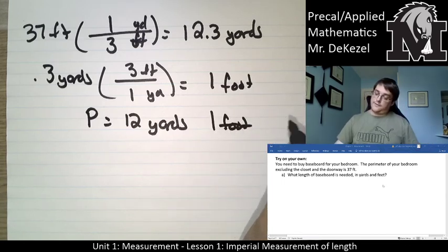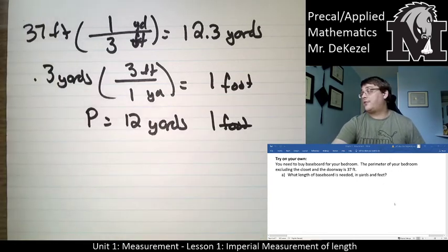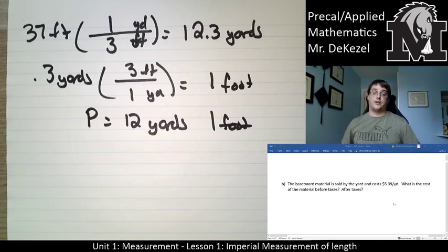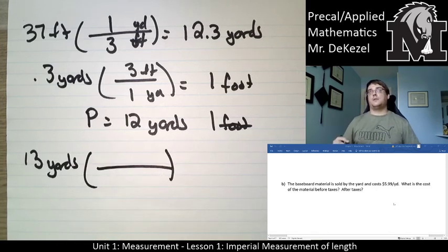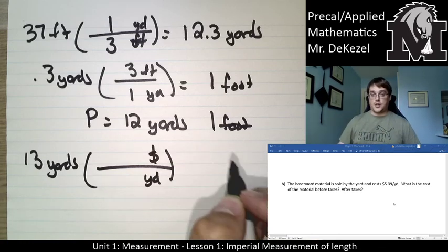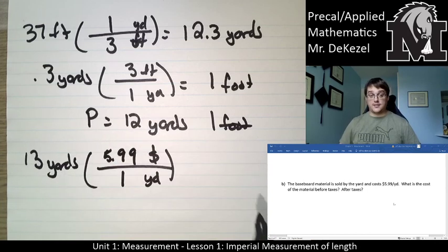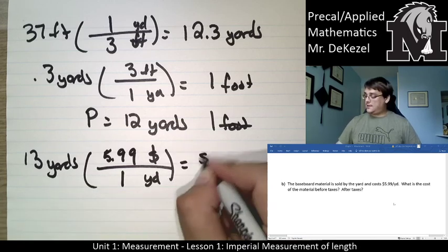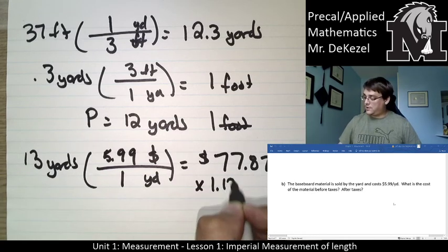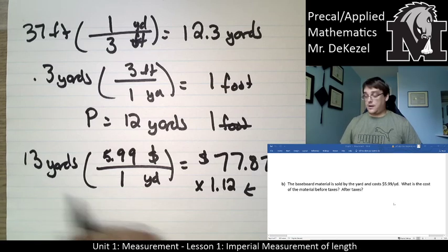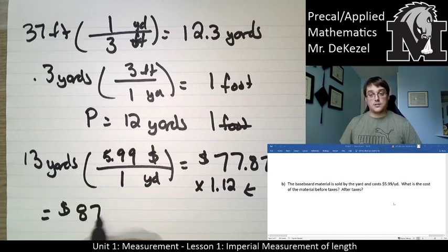The baseboard material is sold at $5.99 per yard. We're going to assume we have to buy 13 yards because we can't buy any less. So we take 13 yards — yards goes on the bottom, money goes on top — at $5.99 per yard. We multiply 13 by $5.99 to get $77.87 before taxes. Multiplying by 1.12 for 12% tax gives us $87.21 after taxes.